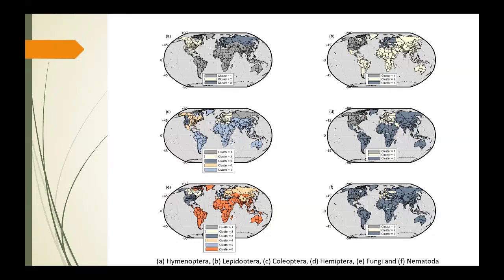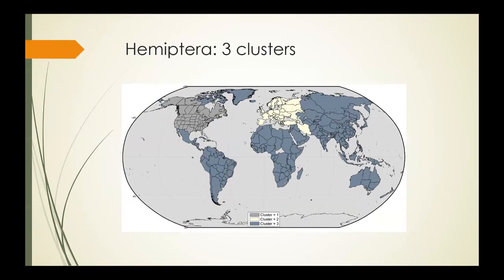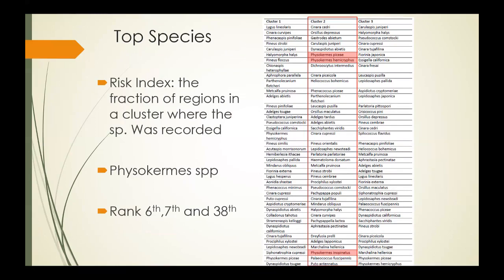This is one example close up for the Hemiptera, showing the clustering. It shows a very distinct European, North American, and rest of the world cluster—a straightforward three-cluster outcome. It's not just maps that are produced by the hierarchical clustering. The analysis can also facilitate a quantification of the risk of establishment posed by the species analyzed.